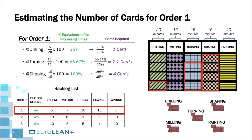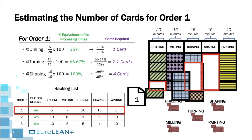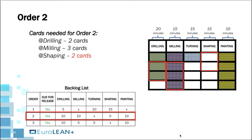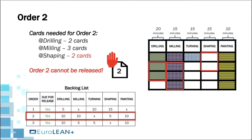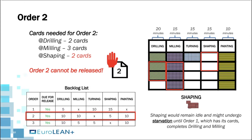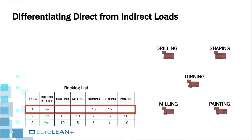The required cards are available on the board, so they are removed and attached to Order 1 for its release into the system. Next is Order 2, which cannot be released because the two cards it requires for shaping are not available on the board. This means shaping would remain idle and might undergo starvation until Order 1 arrives with its four cards — not an ideal situation, since Order 1 does not yet contribute to shaping's workload until it completes drilling and milling. This brings us to the concept of differentiating between direct and indirect loads.